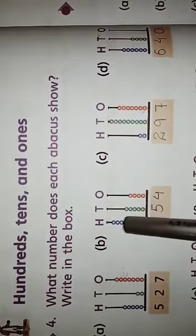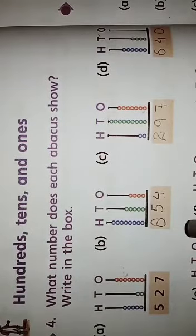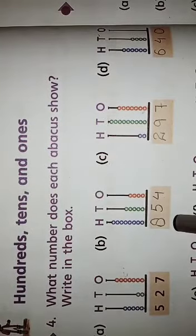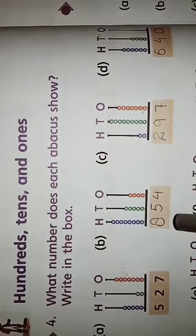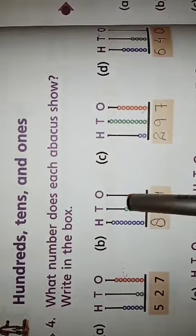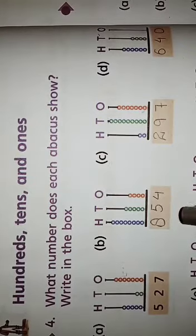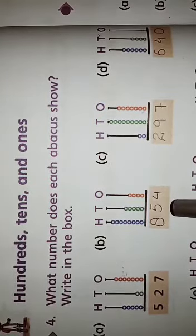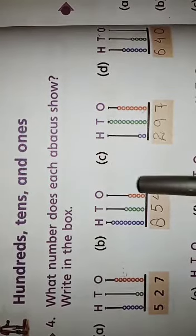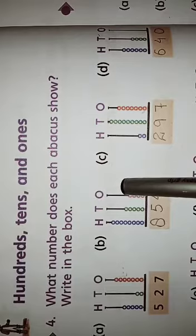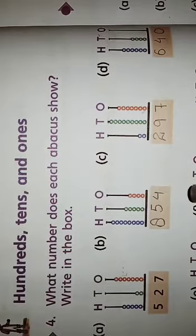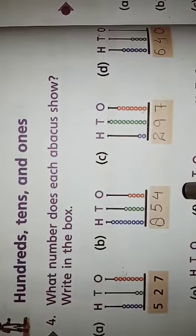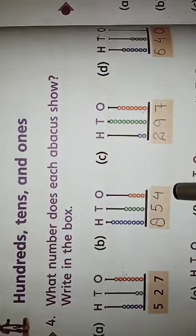In the second question, in the hundreds column there are 8 beads so you will write 8. In the tens column there are 5 beads so you will write 5. And in the ones column there are 4 beads so you will write 4.